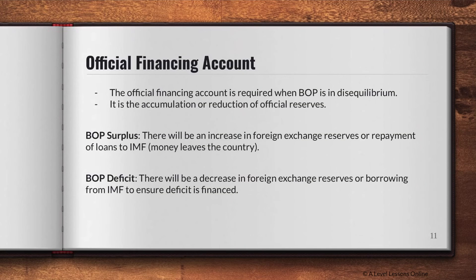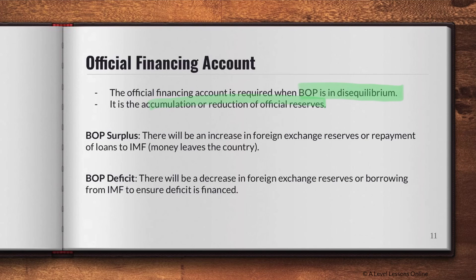The last account is the official financing account. It's not as important as the current and capital accounts, but take note: the financing account is used when the Balance of Payments is in disequilibrium. It is the accumulation or reduction of official reserves. For example, if there's a Balance of Payments surplus, there will be an increase in foreign exchange reserves or repayment of loans to the IMF — money leaves the country to reduce the surplus.